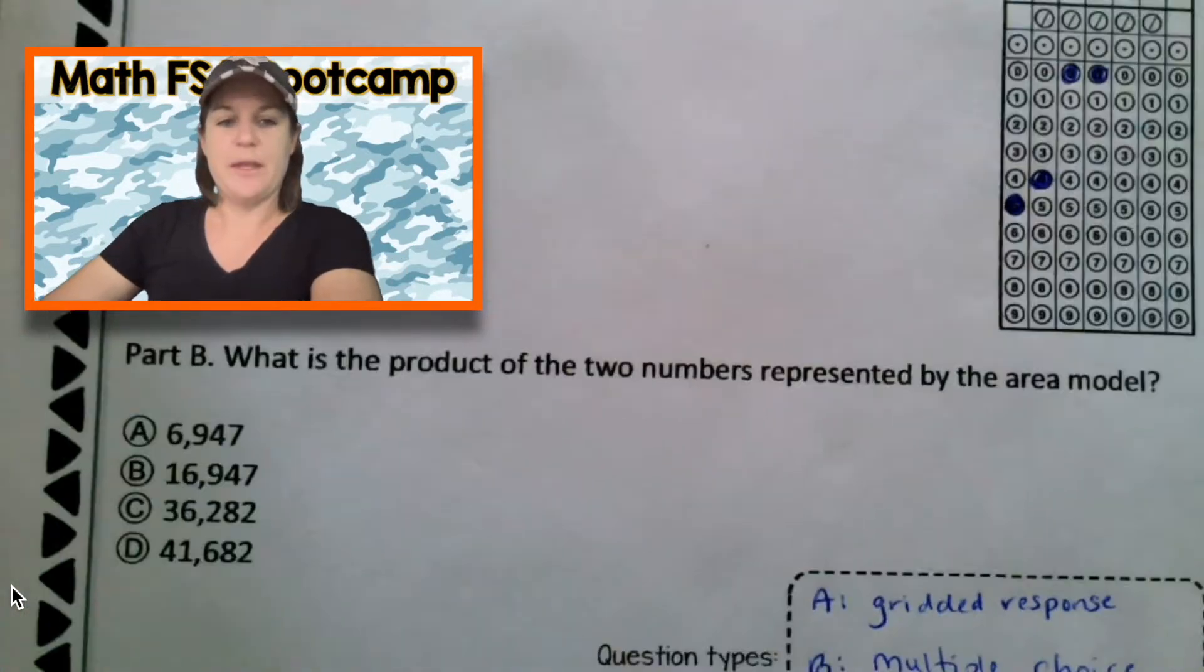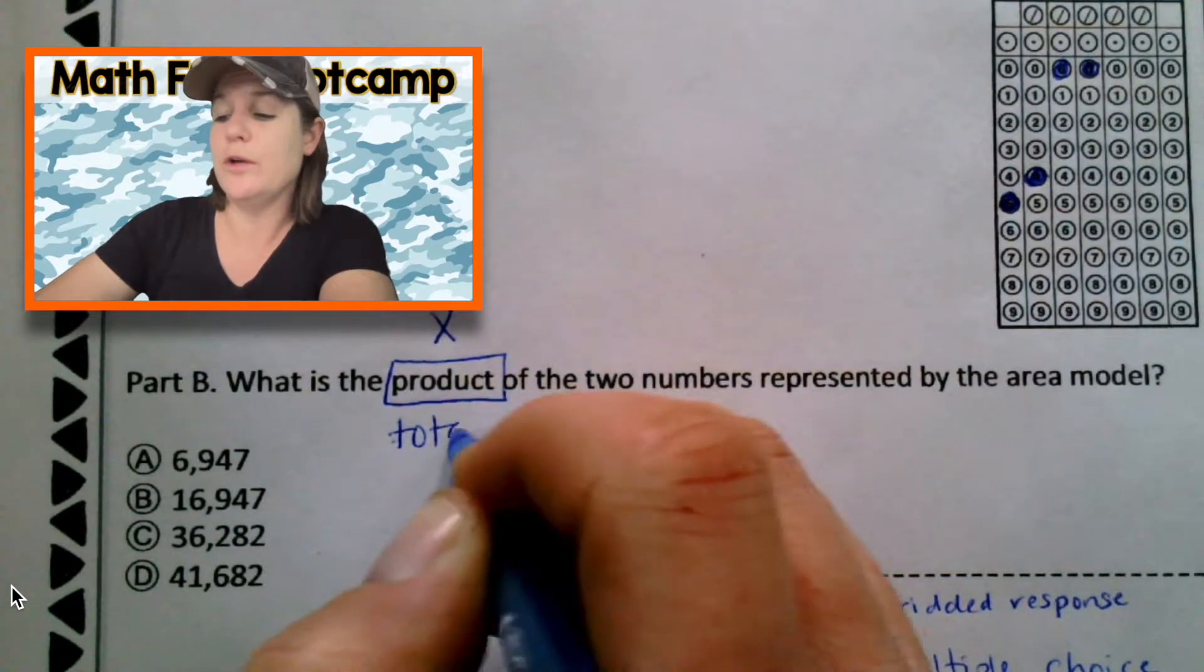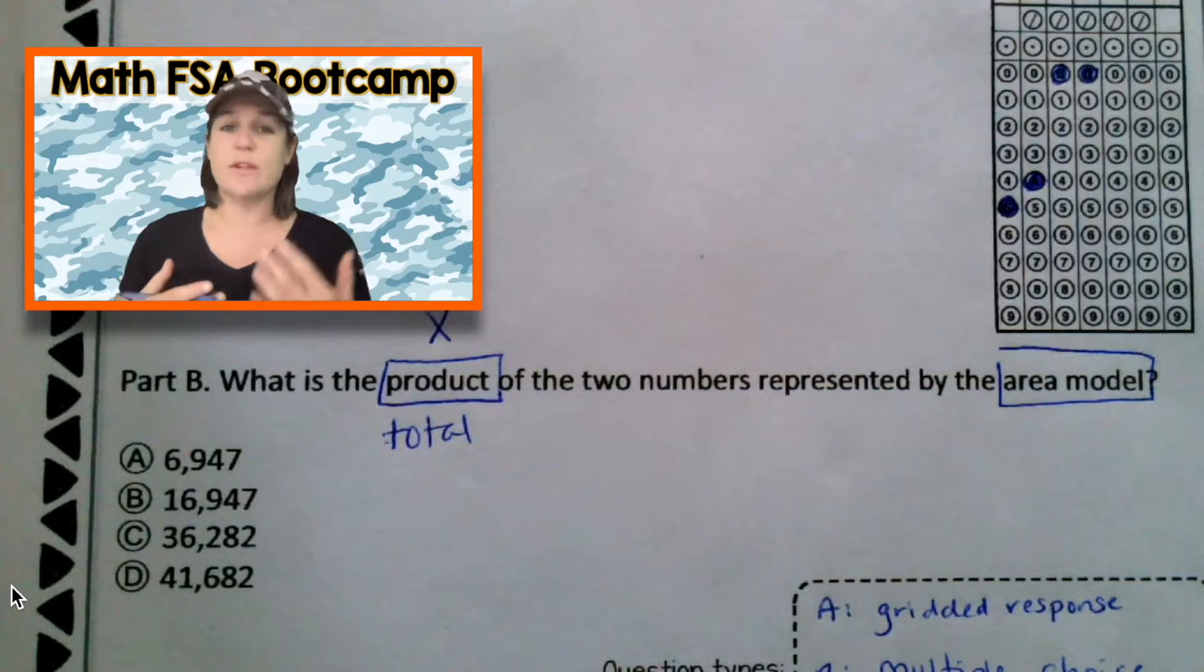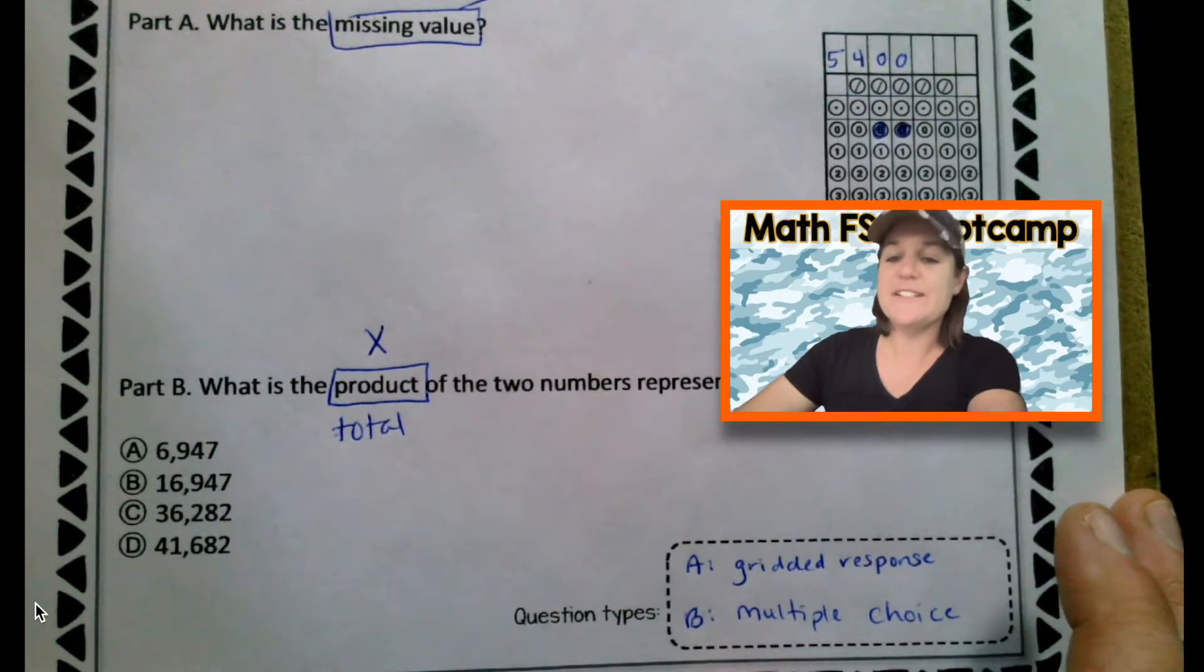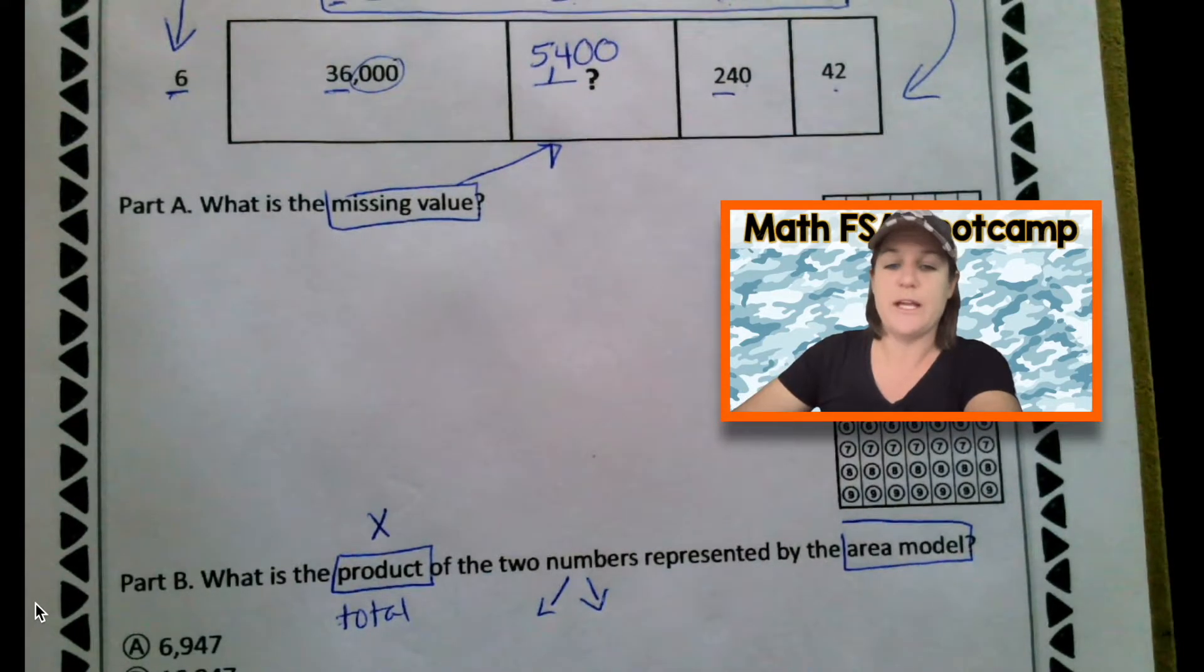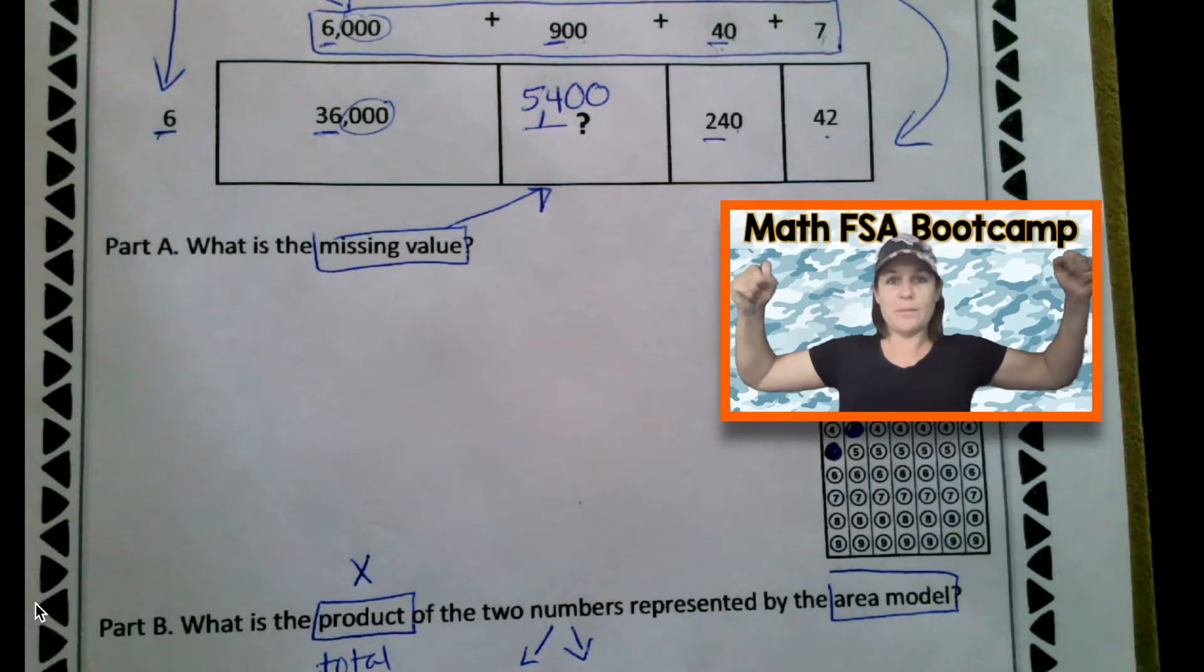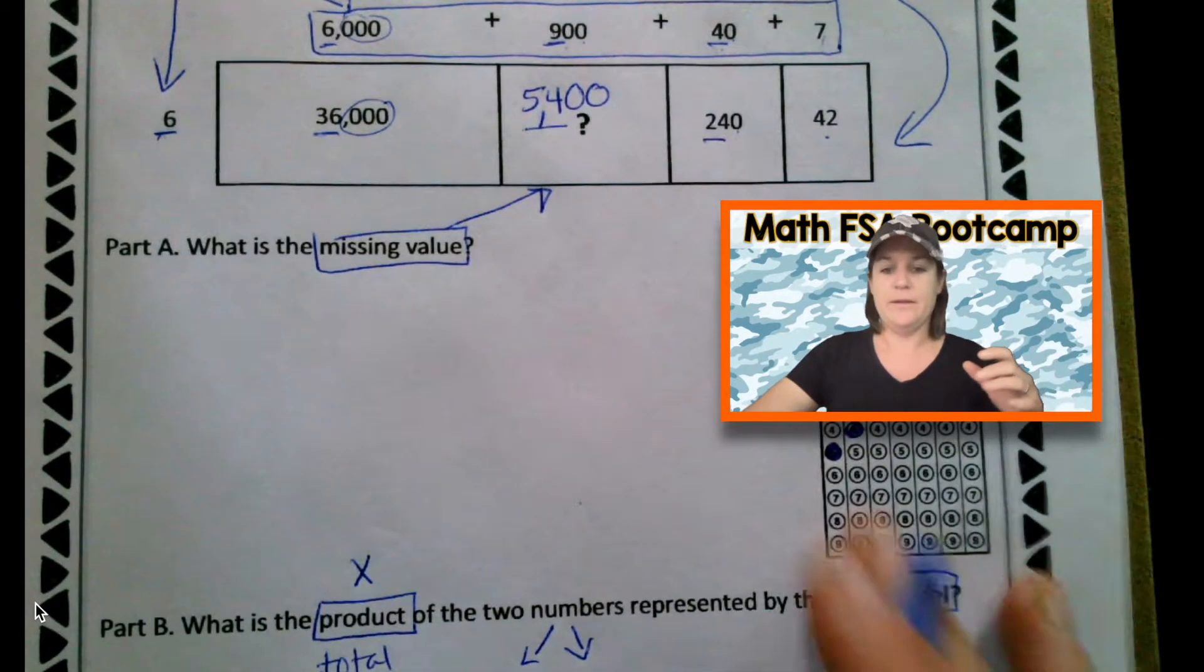Let's look at the second part. The second part says, what is the product? Product means that we are going to multiply. The product is the total when we multiply. What is the product of the two numbers represented by the area model? Okay, I'm going to do this two ways. I was pretending as if I wasn't sure what an area model was. You should know what an area model is because that's one of the strategies that I know is taught in most Florida schools. But I'm kind of going at it like, what if I didn't know what it was? What could I still do? So if I didn't know what an area model was, but I knew that I was finding the product of the two numbers, first I need to figure out what those two numbers were that were multiplying. They were six times what? 6,000 plus 900 plus 40 plus seven. And when we take all of those and scrunch them together, because right now it's an expanded form. Let's put it back into standard form. That would be 6,947.